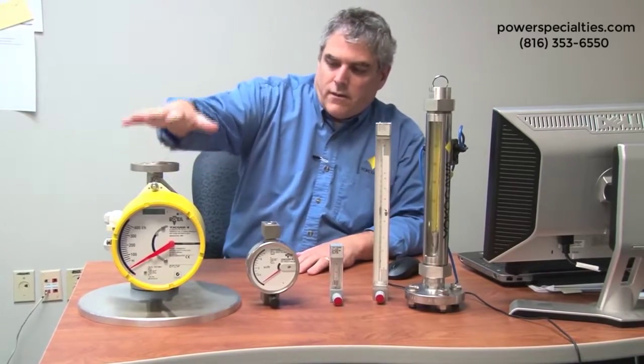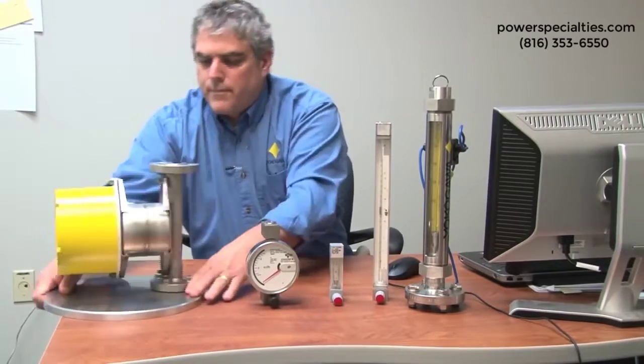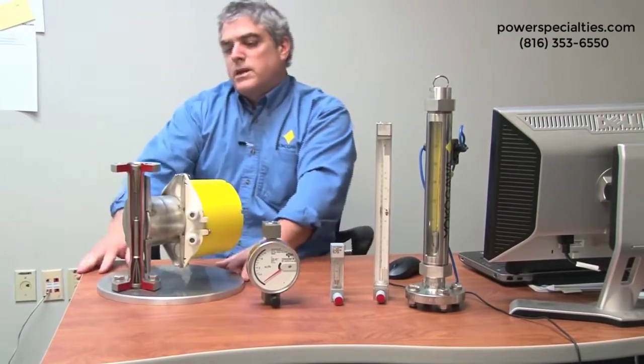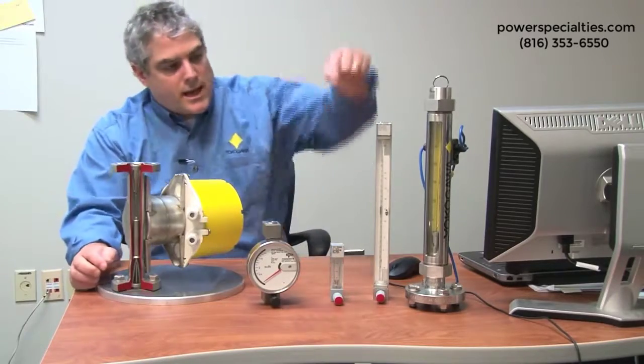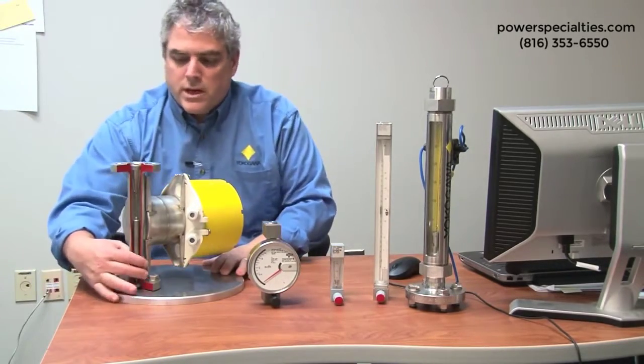This is our line of metal rotometers. All rotometers operate on the same principle, but because these are metal rotometers, you are unable to see, like on the glass rotometer here, exactly what's going on inside the tube.